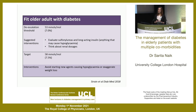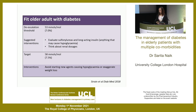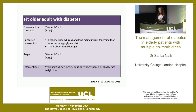For a fit older adult with diabetes, the de-escalation threshold — the point at which you consider reducing medications — is around 53 mmol/mol or about 7%. At this stage, evaluate patients on sulfonylureas such as gliclazide and long-acting insulin. Consider dose changes and renal dosing, which is particularly important with sulfonylureas given the risk of drug accumulation as renal function declines. The treatment target to aim for remains around 58 mmol/mol or 7.5%.